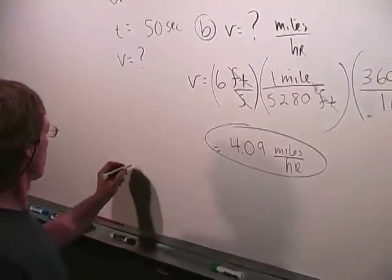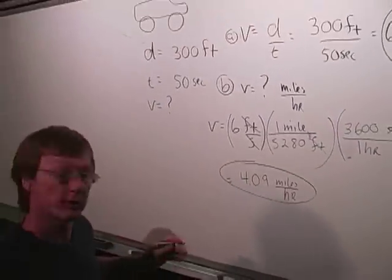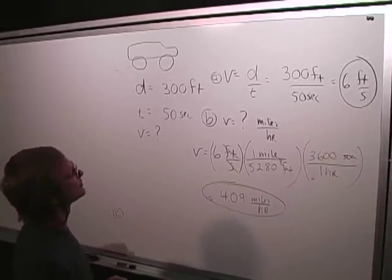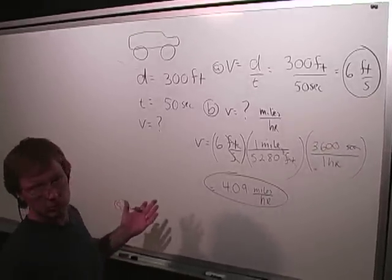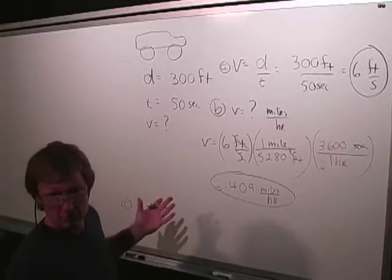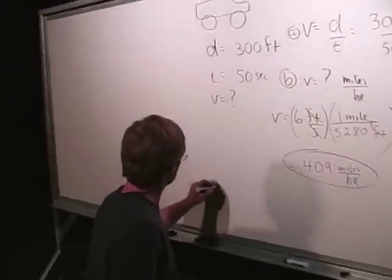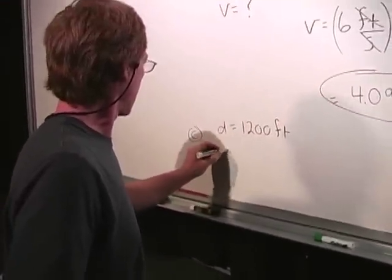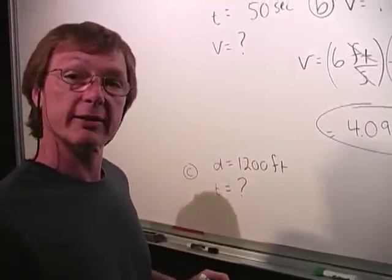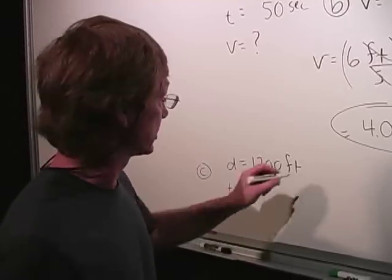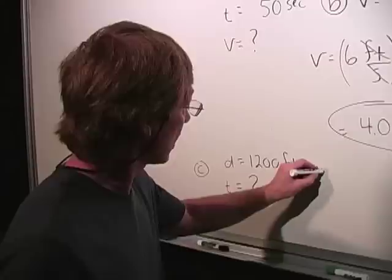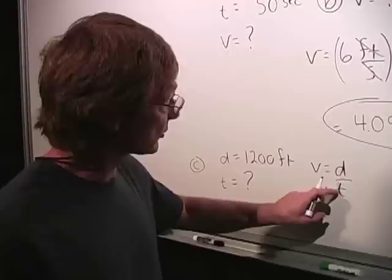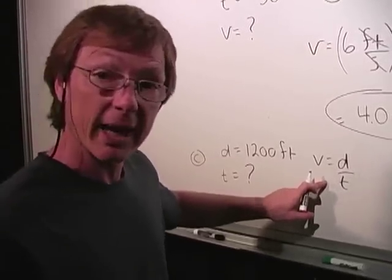Now let's try one more piece, just to move the equation around. Let's say I want to go a distance of 1,200 feet. And I want to know, how long is that going to take? Now, I need a new working equation. Velocity is distance over time. But that's not my working equation, because I need to solve for time. I need to get it on top and by itself.